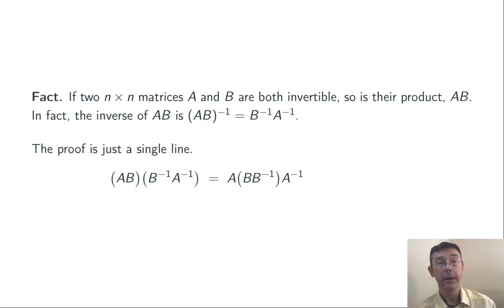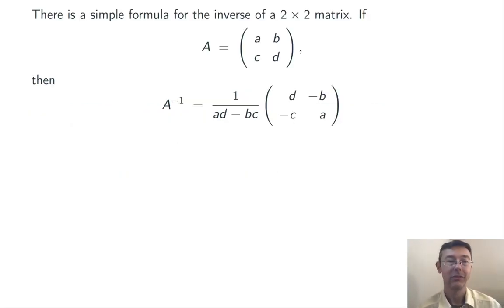Using the associative property, I can change around the parentheses, and then BB^(-1) is the identity matrix, and then I'm left with AA^(-1), which is just the identity matrix. This shows that AB and B^(-1)A^(-1) are in fact inverses of each other.